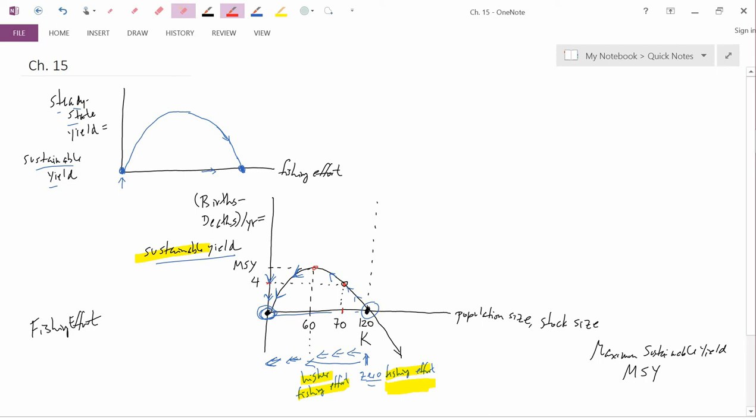Revenue has to do with the price of the output times quantity. Costs also have to do with prices of input. We don't have any prices yet, and so now is the point in the discussion where we need to add prices to this story and dollars.